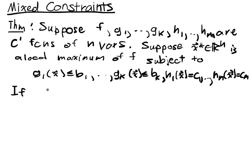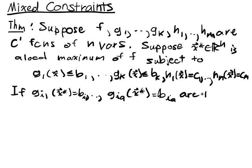Now we have to talk about the non-degenerate constraint qualification. If Gi1 X star equals B all the way up to G i sub A X star, so this will be B sub i1 equals B i sub A, these are the binding constraints.